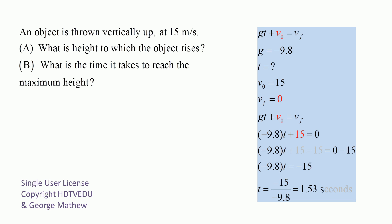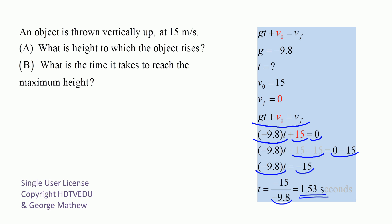Let's substitute all those numbers that we know. So: acceleration due to gravity times t plus V0 equals V final. Acceleration due to gravity is negative 9.8 times time; initial velocity is 15; final velocity is zero. Subtracting 15 from both sides: negative 9.8 times time equals negative 15. Dividing both sides by negative 9.8, we get 1.53 seconds.